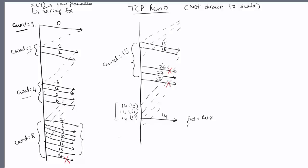You then enter the fast recovery phase, setting ssthresh equal to 7 and CWND equal to 7 plus 3, which is 10. The 3 accounts for the fact that three packets have been removed from the pipe. When you receive the next duplicate ACK, generated by packet 18, you increment the congestion window to 11. This is an artificial inflation — to determine whether you can send any packets, you need to figure out how many packets are actually outstanding.